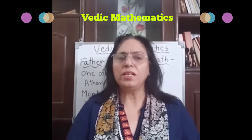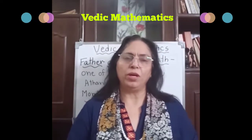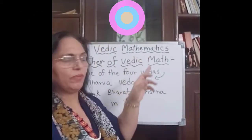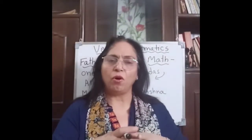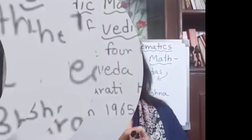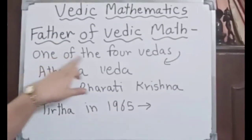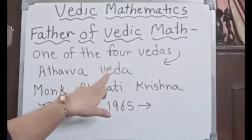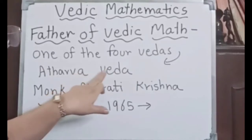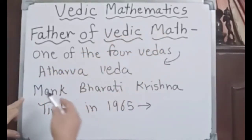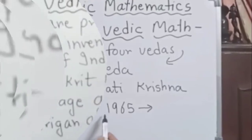Vedic Mathematics — what is the meaning of Vedic Mathematics? Vedic Mathematics means fast calculation for kids. We have to use it wisely. One of the four Vedas, Atharva Veda, is the source. From Atharva Veda, we have Vedic Mathematics and Monk Bharti Krishnatirtha.